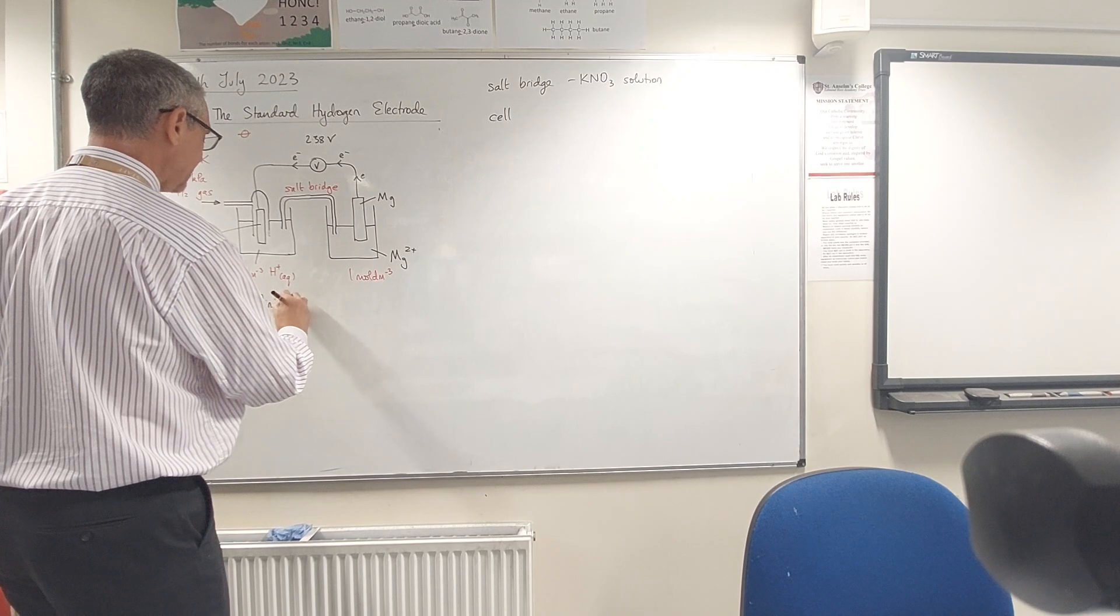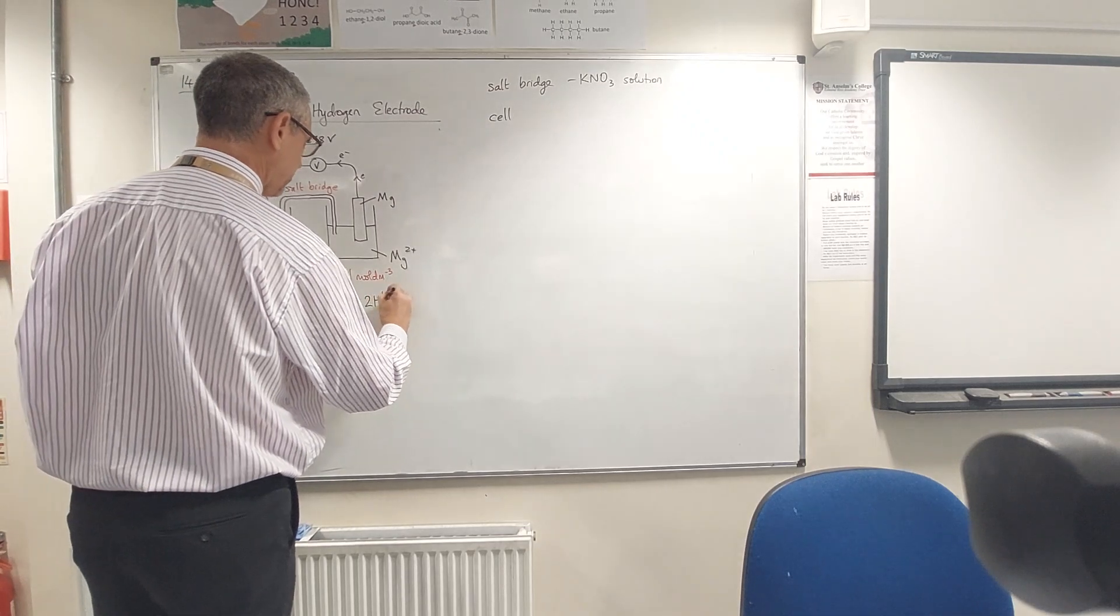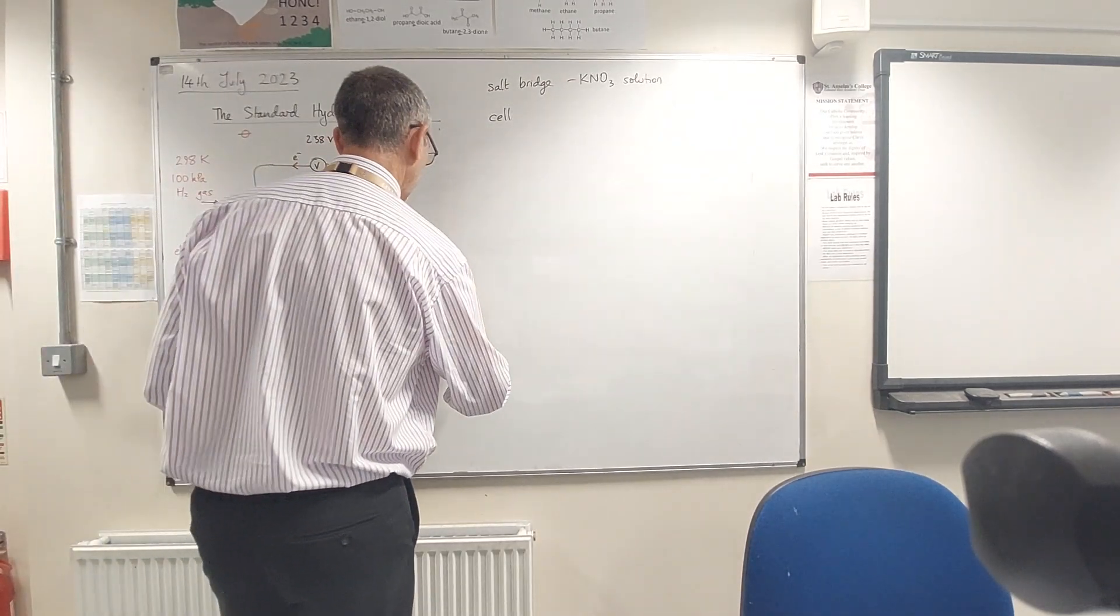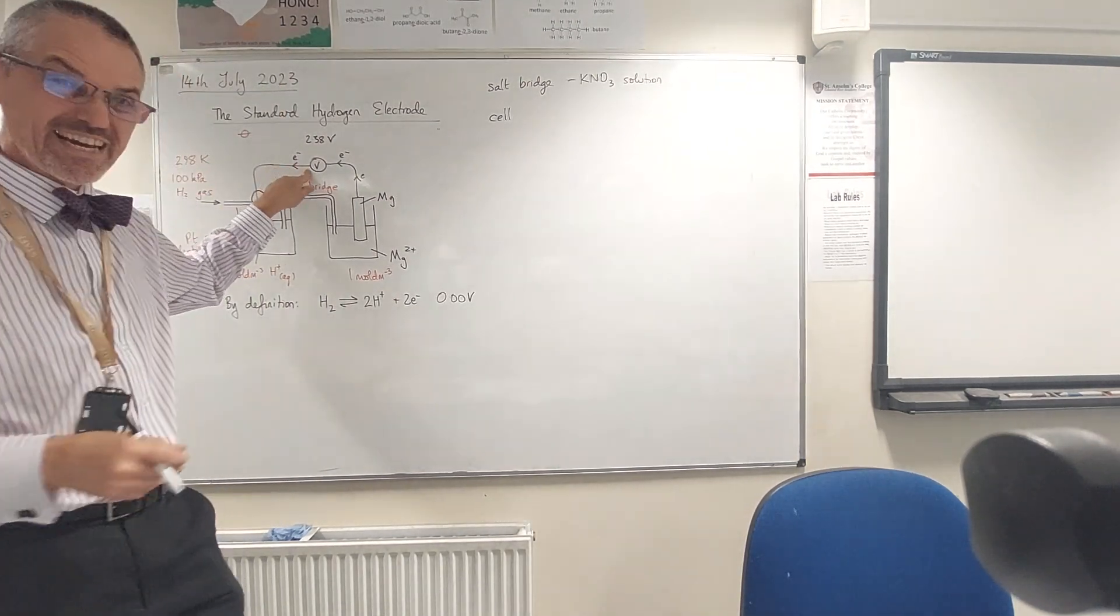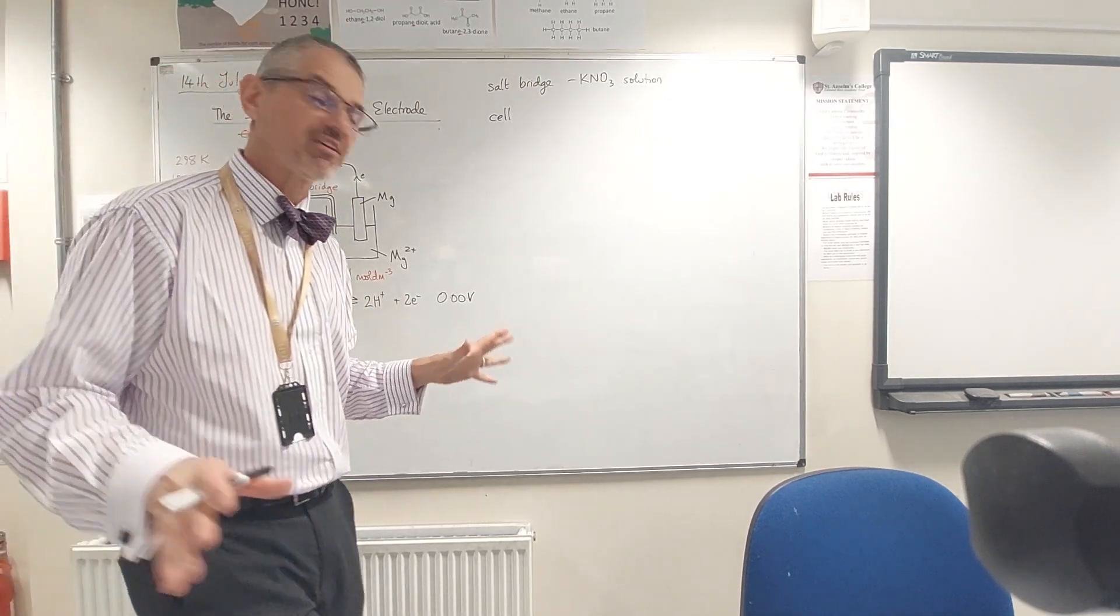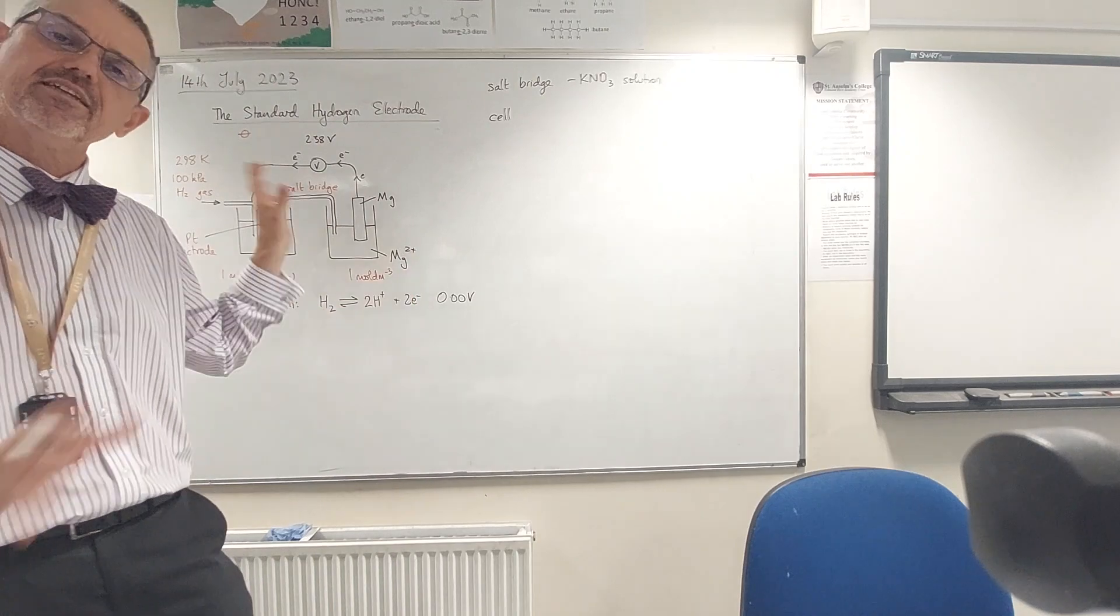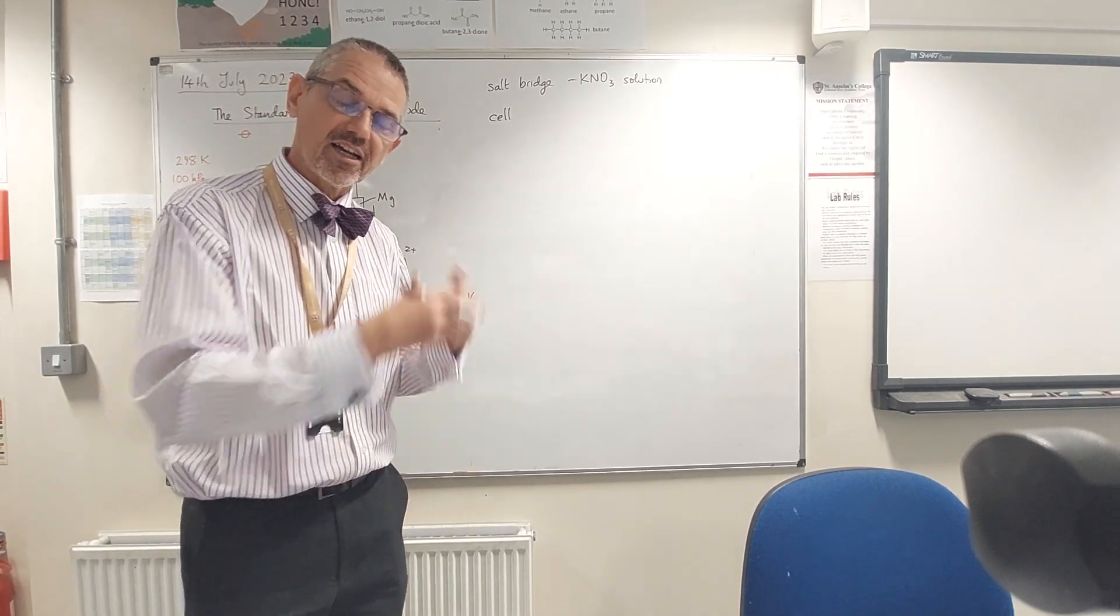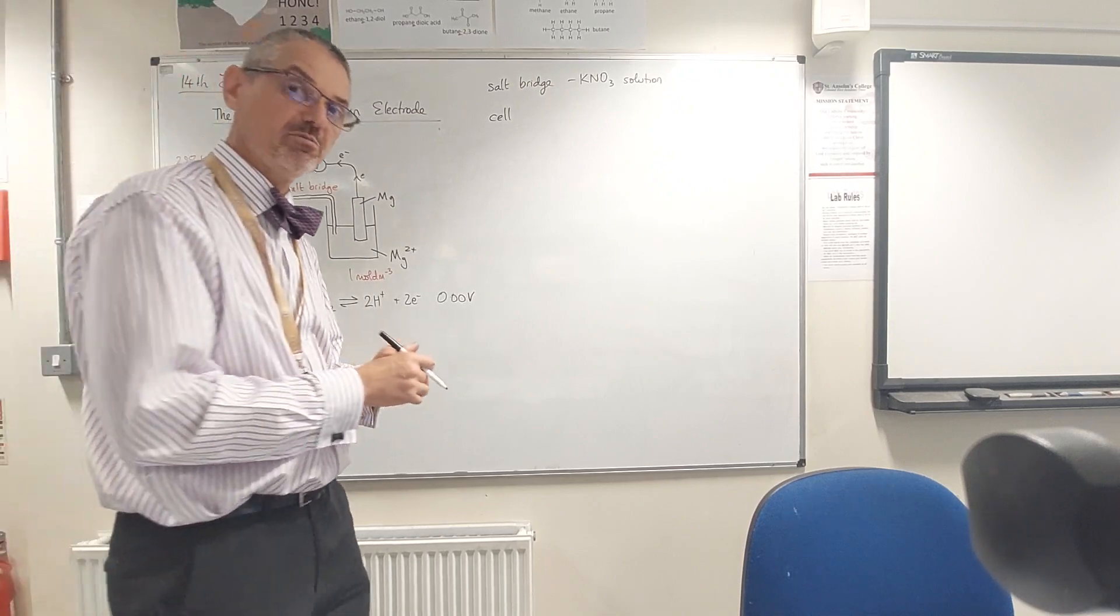The idea here is that we say by definition the standard hydrogen electrode contributes nothing. We don't know if hydrogen's being oxidized or reduced, so we use a reversible arrow and that is contributing 0.00 volts. In other words, whatever reading I get on the voltmeter up here, that is all from the metal. Now this is marvelous because I can just swap out lots of different metals here - copper, lead, tin, zinc - and see how much each delivers the voltage. Then from that I can construct a table of standard electrode potentials.